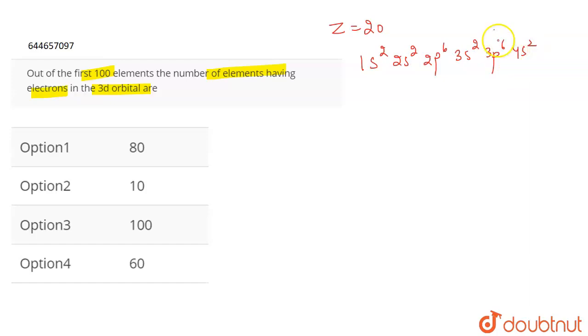This means that up till atomic number 20, no 3D orbital is getting filled. No D orbital filling is taking place. The first 20 elements do not have any electrons in the 3D orbital.